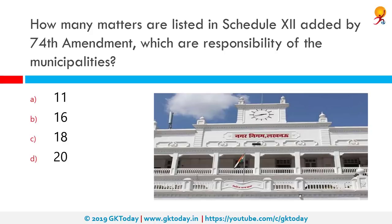How many matters are listed in Schedule 12, added by the 74th Amendment, which are the responsibility of municipalities? The correct answer is 18. The act aims at revitalizing and strengthening urban local governments so that they can function effectively. The 12th Schedule was added by the 74th Amendment Act of 1992 and contains the powers, authority, and responsibilities of the municipality.